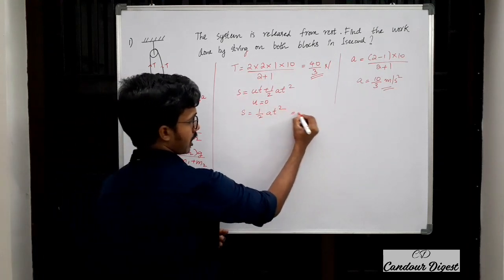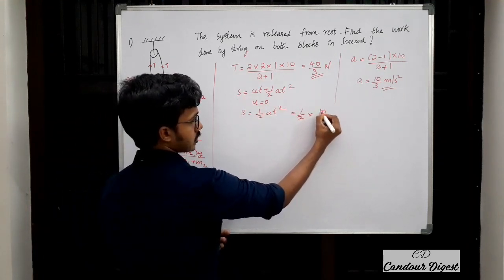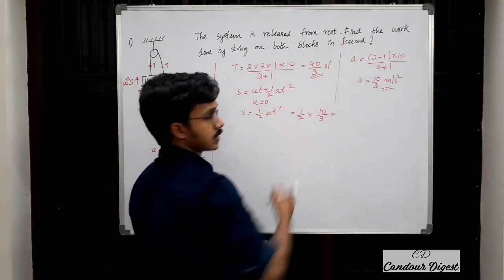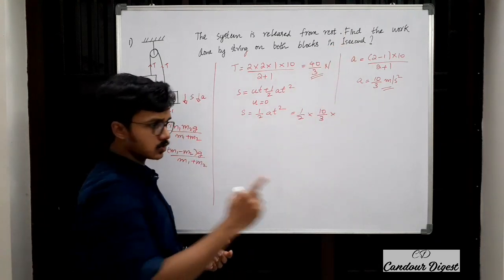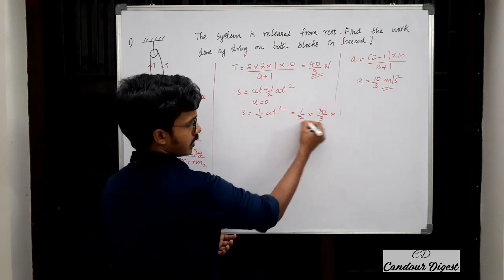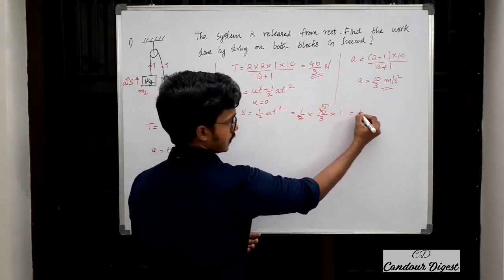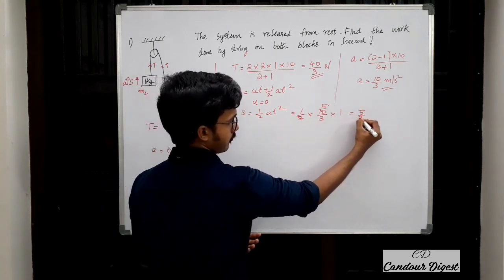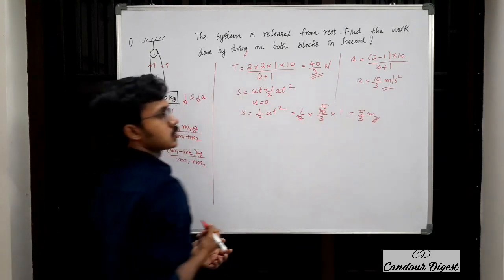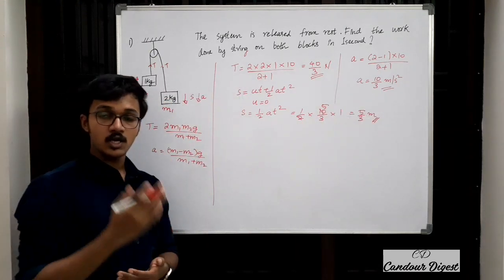Substituting into s = ½at²: s = ½ × (10/3) × 1² = 5/3 meters. So we have obtained the displacement as well.